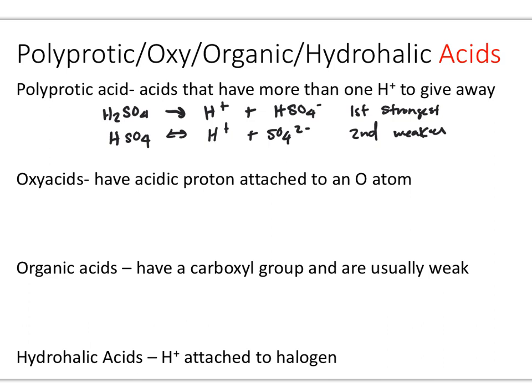Oxy acids are actually pretty common. They have their acidic proton attached directly to an oxygen atom in the molecular structure. Phosphoric acid is an example of an oxy acid. It has three hydrogens attached directly to oxygen atoms in the molecule, giving three potential locations to remove protons. This is facilitated by the electronegativity difference — the oxygen pulls electron density towards itself, making the H atoms more easily ionizable. Hypochlorous acid and nitrous acid are also examples of oxy acids. What you need to understand is that the hydrogen is going to be directly attached to an oxygen in the molecular structure.